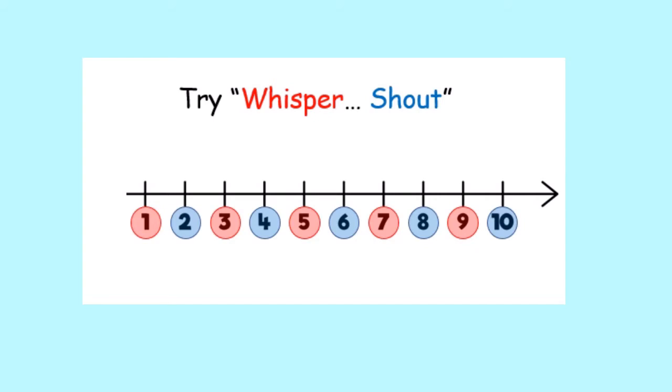Let's try whispering and shouting the numbers to work out the twos numbers. Let's whisper the red numbers and shout the blue numbers. One, two, three, four, five, six, seven, eight, nine, ten. Well done. The numbers that you shouted are the twos numbers, you were counting in twos.